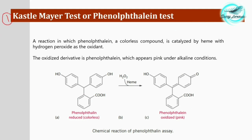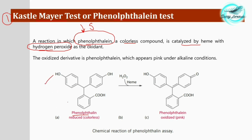The other name of the phenolphthalein test is the Castle Meyer test. The principle is that phenolphthalein — the substrate — is colorless, and it is catalyzed by heme with hydrogen peroxide as the oxidizing agent. You can understand this test from the reaction shown here: phenolphthalein is colorless in nature; in the presence of hydrogen peroxide and heme acting as a catalyst, it is converted into a colored product.